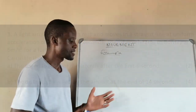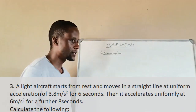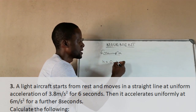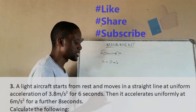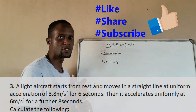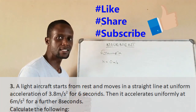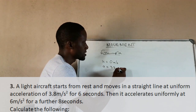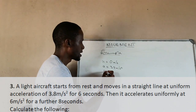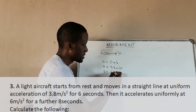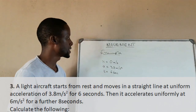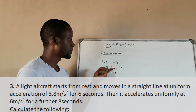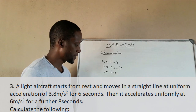Before we go to the question and start calculating, we have to pay attention to the details of the statement. It says the aircraft starts from rest, so the initial velocity is zero meters per second. Then it moves in a straight line — take note, movement in a straight line means speed and velocity are the same, and displacement and distance are the same. It moves at a uniform acceleration of 3.8 meters per second squared for a time of six seconds, meaning every second the velocity is changing by 3.8 meters per second.